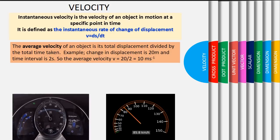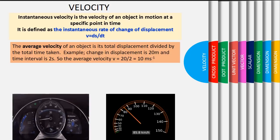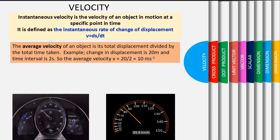Average velocity: The average velocity of an object is total displacement divided by total time taken. For example, if the change in displacement is 20 meters and time interval is 2 seconds.